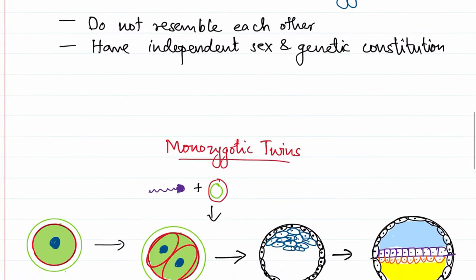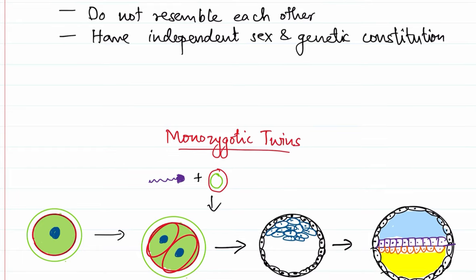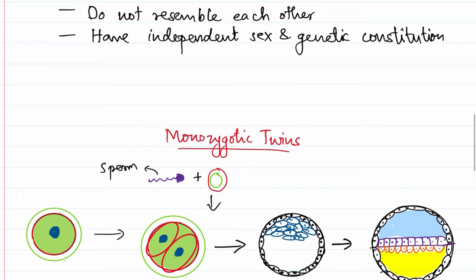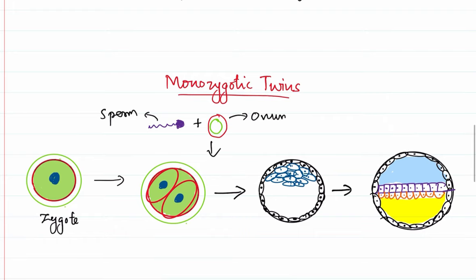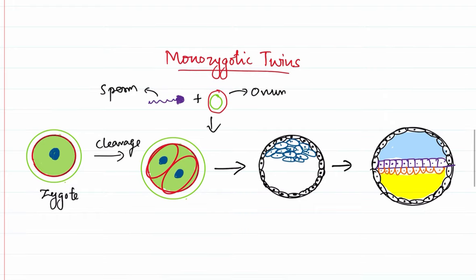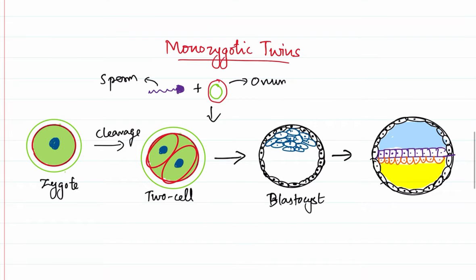Now let's speak about monozygotic twins. To understand that, let's review the normal physiology. A sperm penetrates the ovum to form a zygote. This zygote undergoes cleavage to form the two-cell stage, which continues until we have the formation of a blastocyst. At the blastocyst stage we have an outer trophoblast and an inner cell mass, which then undergoes implantation, and finally develops into a bilaminar germ disc.